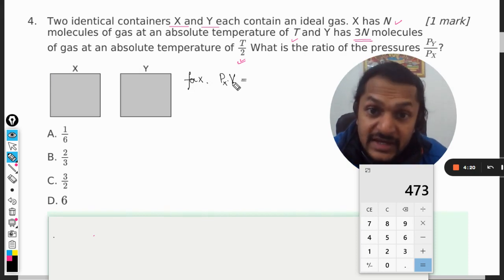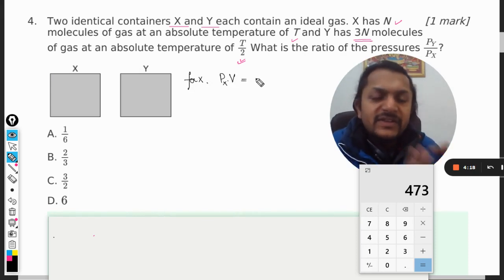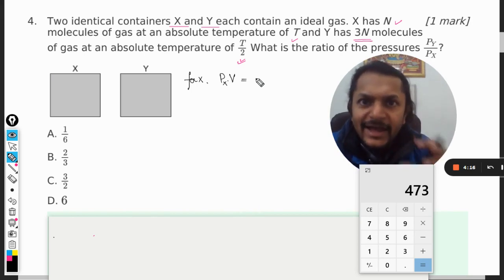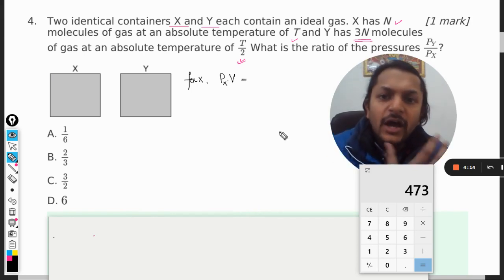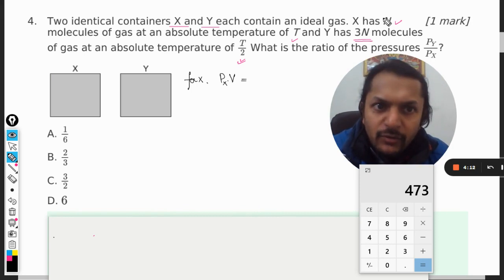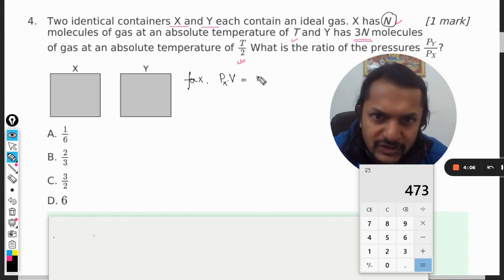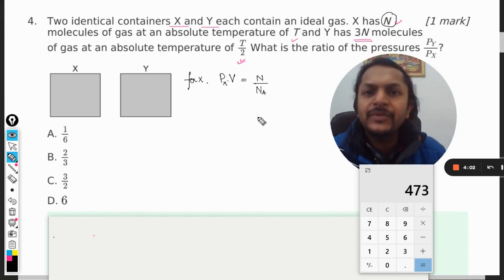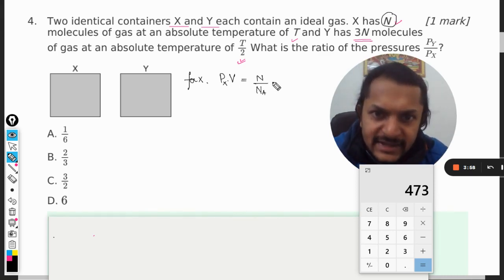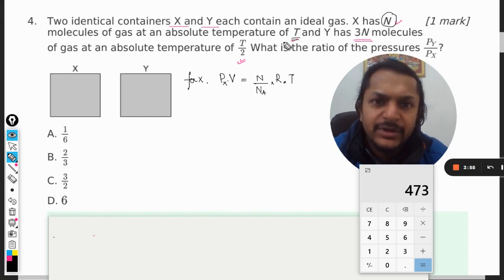Now PV is equal to nRT, and what is n? n is number of moles. How do you find number of moles? Number of moles is found by dividing the total number of molecules divided by Avogadro's number. So small n can be written as N divided by Avogadro's number, that is 6.023 times 10^23. This into R into T, because T is the temperature at which the box X is maintained.